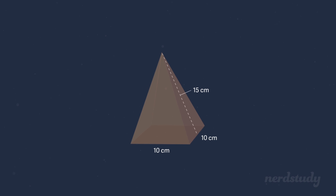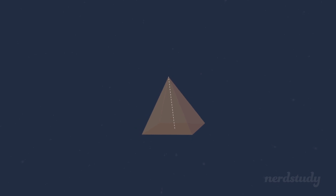Now this was a situation where the height of the triangular lateral faces was given to us, which made it easier to find the surface area of the pyramid. But what if it wasn't given to us, and instead we were given the height of the pyramid itself? So let's try another example with different dimensions, but this time given the height of the pyramid, and see what we would do to find the surface area.